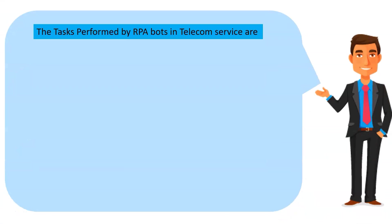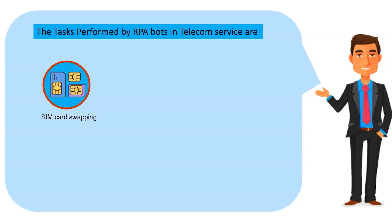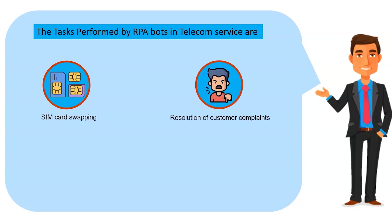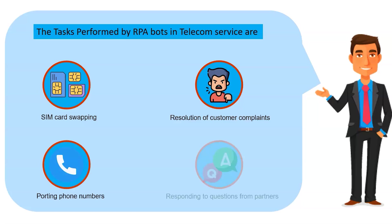The tasks performed by RPA bots in telecom service are credit checks and SIM card swapping, resolution of customer complaints, porting customer phone numbers, and responding to questions from partners.